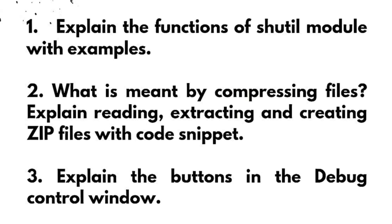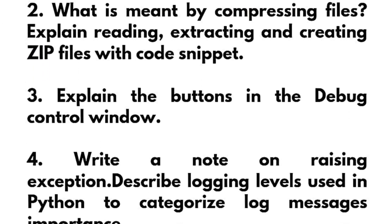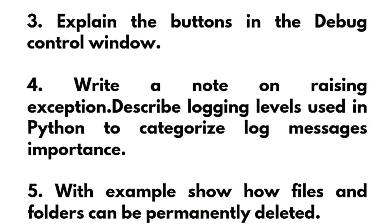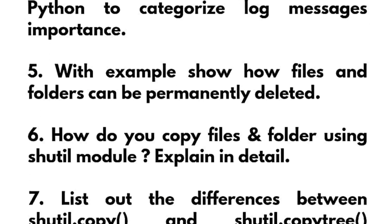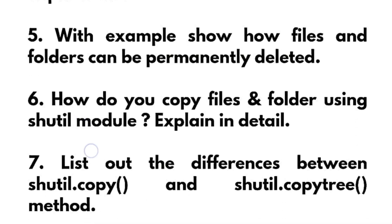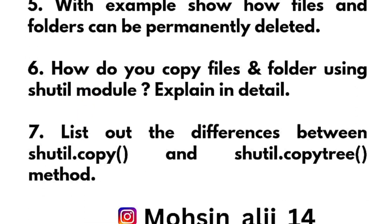In Module 4, the super important questions are: explain the functions of the shutil module with examples. What is meant by compressing files — explain reading, extracting, and creating zip files with code snippet. Explain the buttons in the debug control window. Write a note on raising exceptions. Describe logging levels used in Python to categorize log messages with example. Show how files and folders can be permanently deleted — this may be a six or seven marks question. How do you copy files and folders using the shutil module, and list out the difference between shutil.copy and shutil.copytree methods.